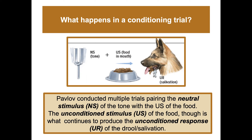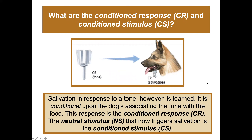After this relationship is learned, salivation in response to the tone is conditional upon the dog associating the tone with food. This response becomes the conditioned response. The neutral stimulus now triggers salivation and is called the conditioned stimulus — it is no longer a neutral stimulus; it has been made into a conditioned stimulus.